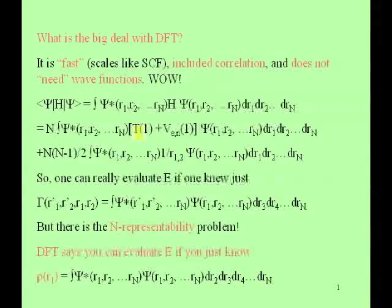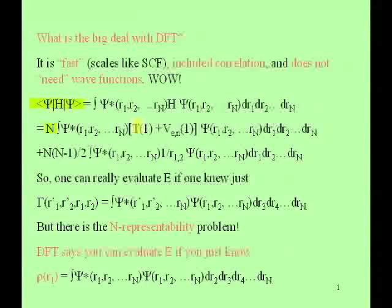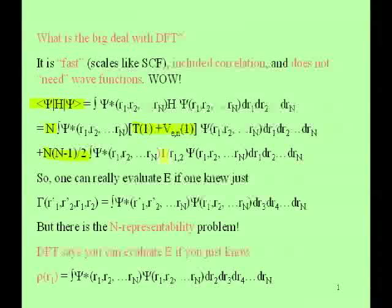When we calculate the expectation value of this energy, there are two kinds of terms in our Hamiltonian: the one-electron additive terms like the kinetic energy T and the electron-nuclear attraction energy VEN, and also terms like the e-squared over r12 terms. One thing people noticed is that you can re-express this expectation value of the total energy as N times an integral involving only the kinetic energy and electron-nuclear attraction of electron one, plus N(N-1)/2, the number of electron pairs, times the integral of psi and psi-star with one over r12.